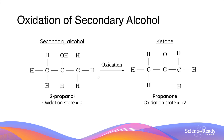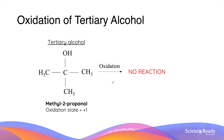Oxidation of secondary alcohols produces a ketone, whereby the oxidation state increases from zero to plus two. Since ketones cannot be further oxidized, this is always the final product of oxidation of a secondary alcohol. Finally, oxidation of tertiary alcohol produces no products as there is no reaction whatsoever — it is not possible to oxidize a tertiary alcohol.